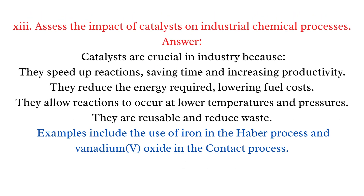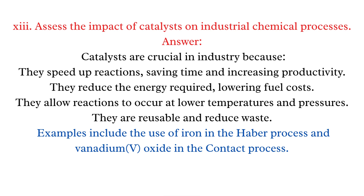Q13: Assess the impact of catalysts on industrial chemical processes. Answer: Catalysts are crucial in industry because they speed up reactions, saving time and increasing productivity. They reduce the energy required, lowering fuel costs, and allow reactions at lower temperatures and pressures. They are reusable and reduce waste. Examples include iron in the Haber process and vanadium(V) oxide in the contact process.